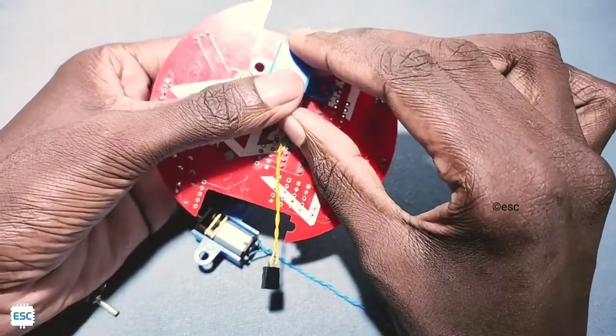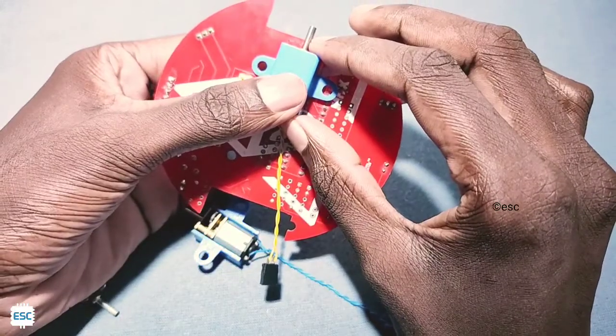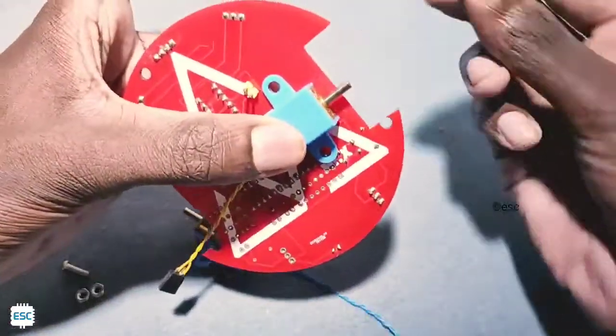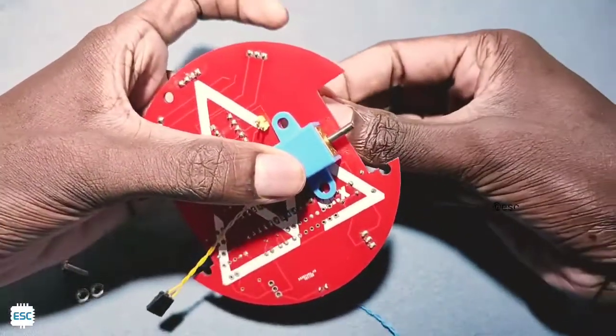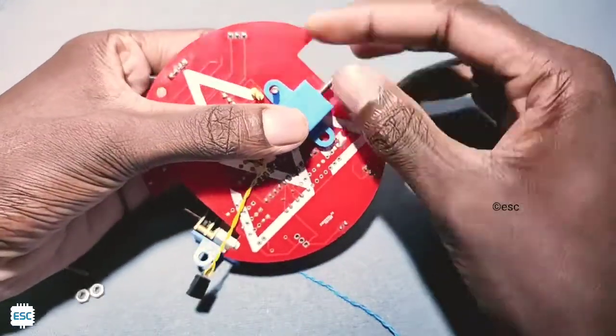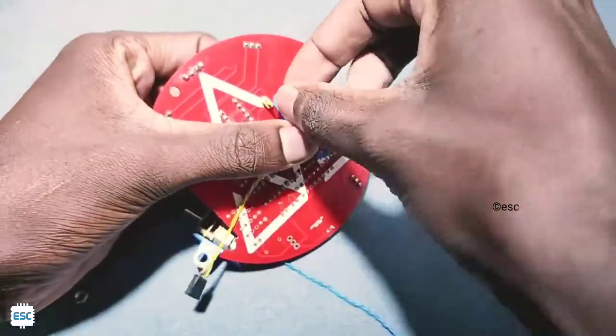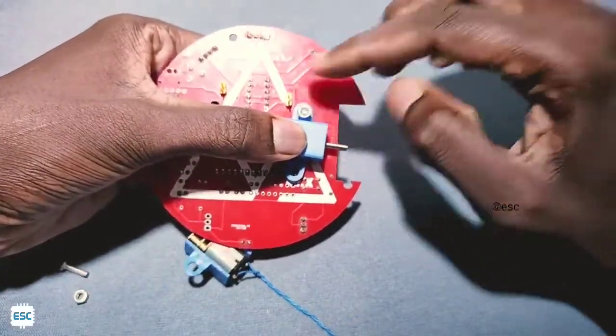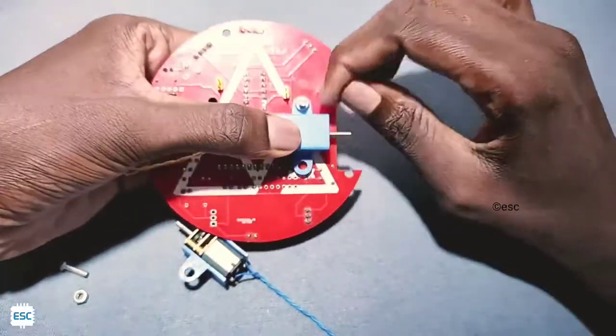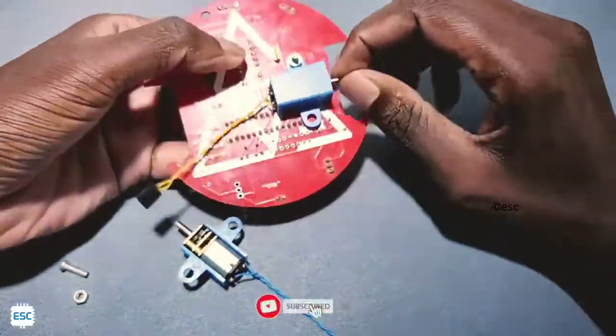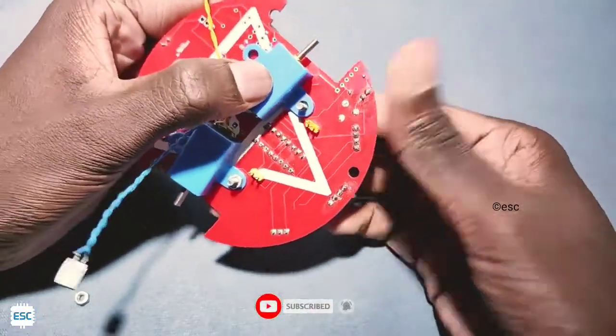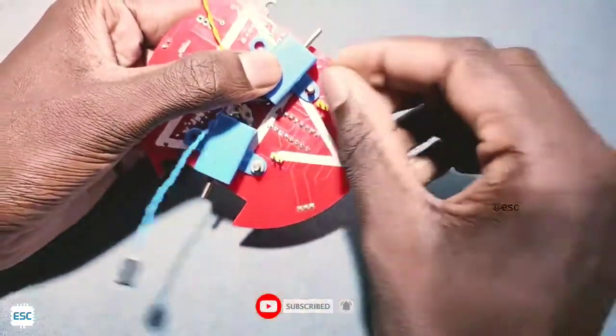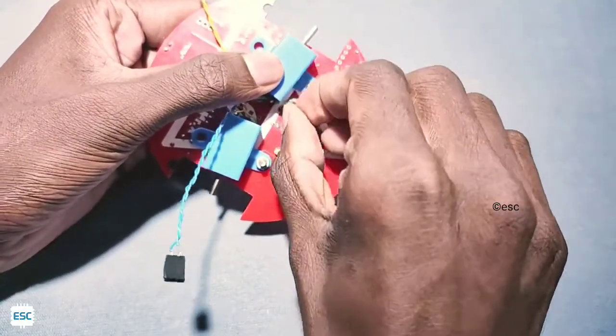Then I fix the N20 motors on the robotic PCB using nut and bolt. You can find all parts purchase links in the description. One of the best advantages of this PCB is we don't need to use an extra chassis for your robotic project, because this PCB will also act like a chassis, so you can save some money.